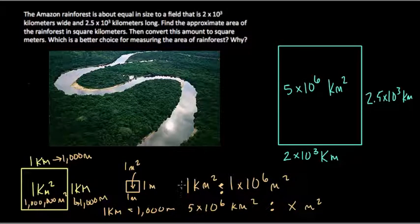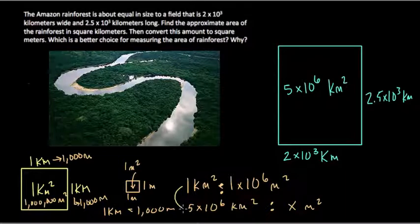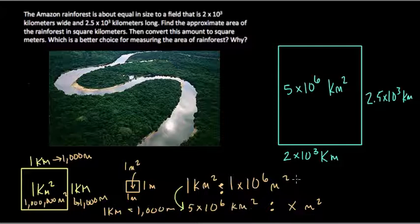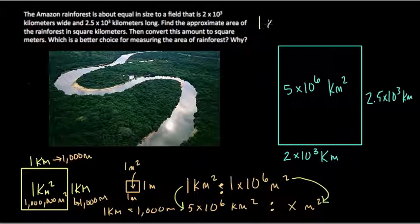So I would just look at this and say, oh well, we took 1 kilometer square and multiplied it by 5 times 10 to the 6th. That would give us 5 times 10 to the 6th kilometers squared. So all I'm going to do is multiply this number to keep our ratio the same by 5 times 10 to the 6th. So we have this new calculation.